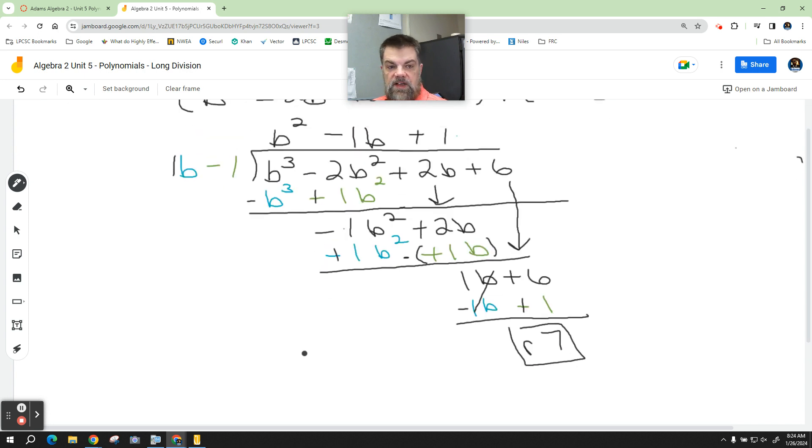So then our solution is b minus 1 times the quantity b squared minus b plus 1 plus, do you guys remember what we do for that last one? What do we do with the remainder? If you don't remember, it's okay. This is literally the third time you've seen it. We're going to put that remainder on top of the fraction. What goes on the bottom of the fraction? What we're dividing by, the divisor.